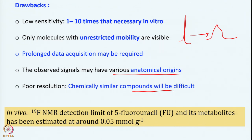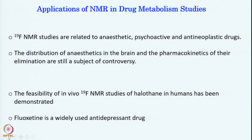The good part is that in vivo detection of F-19 has been done extensively with 5-fluorouracil, which is a cancer drug. Its metabolite has been estimated at around 0.05 millimole per gram — that is the minimum you can detect from an in vivo experiment. So some of these nuclei are really useful for detecting the signal of drug or drug metabolites in an in vivo setting. That is the application we can think of for F-19 based detection.